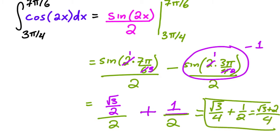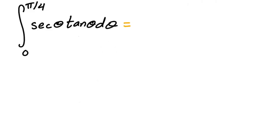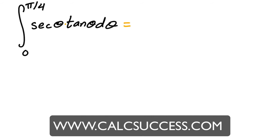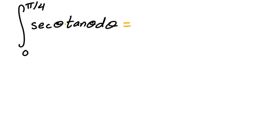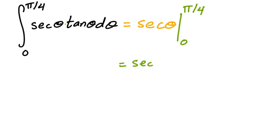This integral looks interesting because there's no product rule for antiderivatives, so you can't just find the antiderivative of each factor separately. Instead, think: what function has a derivative equal to secant theta tangent theta? From your library of derivatives, you know the derivative of secant is secant tangent — so the antiderivative is simply secant.